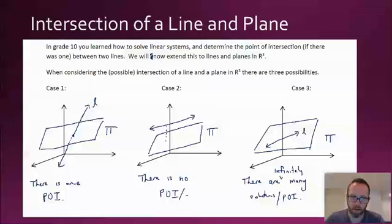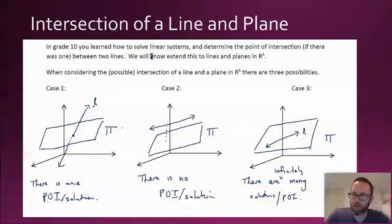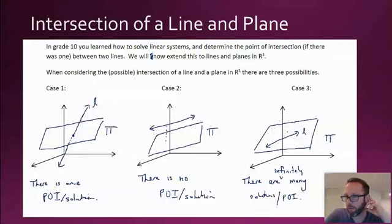Anytime I say point of intersection, we can just interchange that with solution. And if you think back to grade 10, this is the same three cases you get when finding the intersection between two lines in R2: there can be one point of intersection; if they're parallel there can be none; but if the line is actually within the plane, there can be infinitely many.